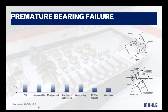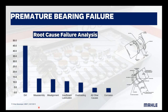Premature bearing failures — this is our analysis of root cause failures. As you can see, the most common by far is dirt, or more accurately, contamination. There's a lot of different types of contamination we'll go over. Definitely the number one failure we see is contamination.